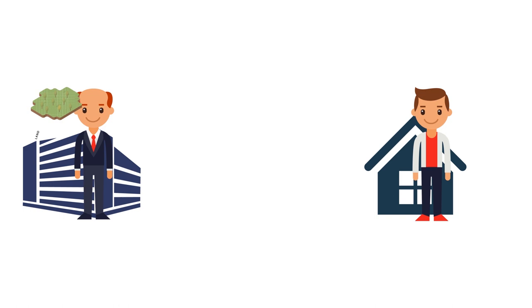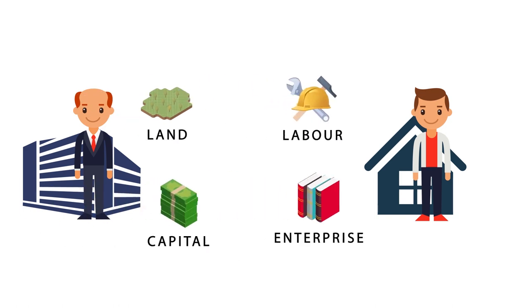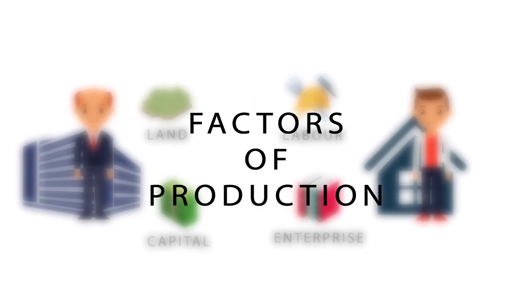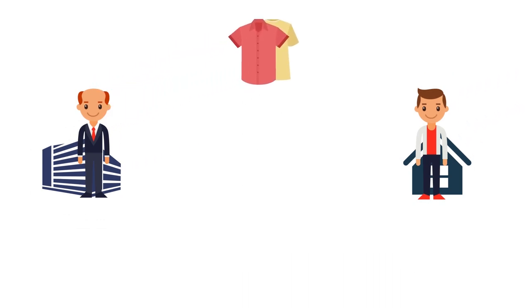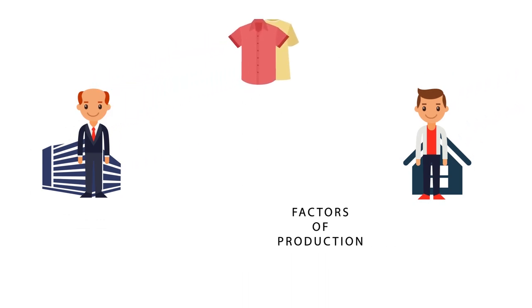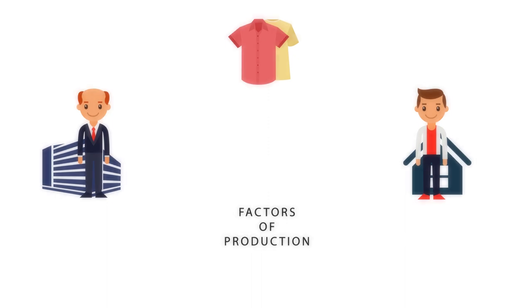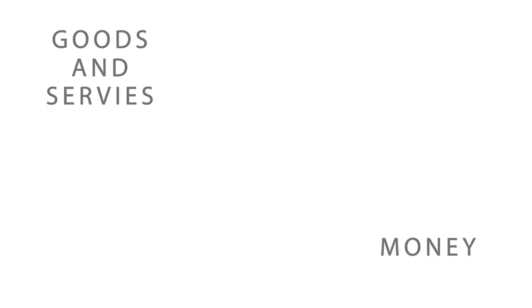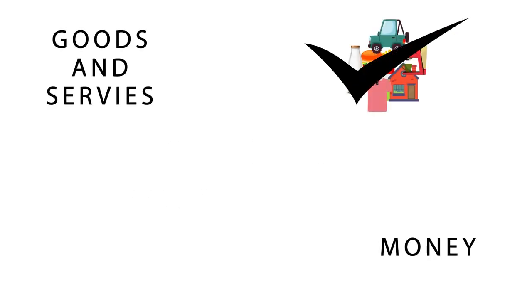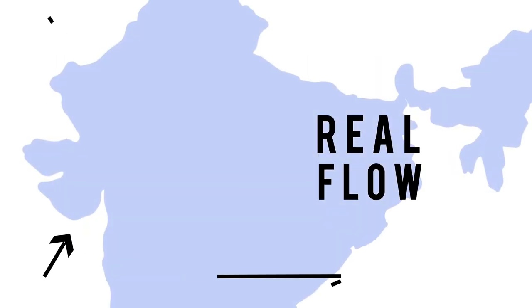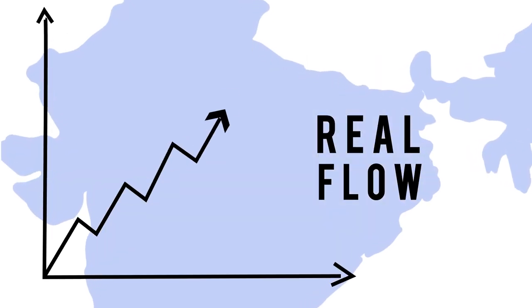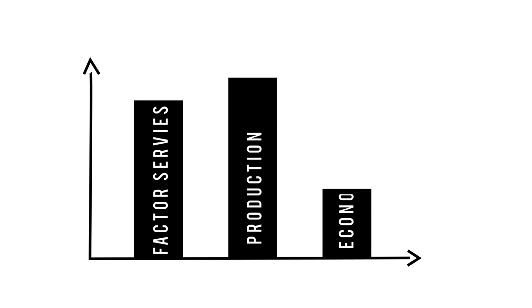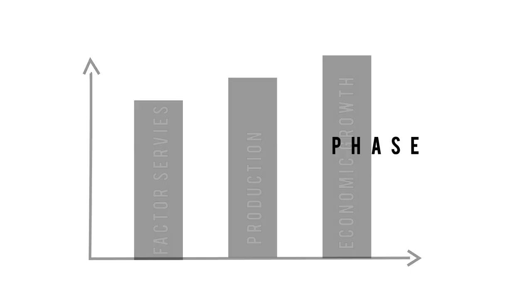The inputs offered by households — land, labor, capital, and enterprise — are categorized as factors of production. The product produced by the firm for household consumption, as well as the factor services provided by households, is termed real flow or physical flow, as there is only exchange of goods and services without exchange of money. The real flow determines the magnitude of the growth process in an economy.